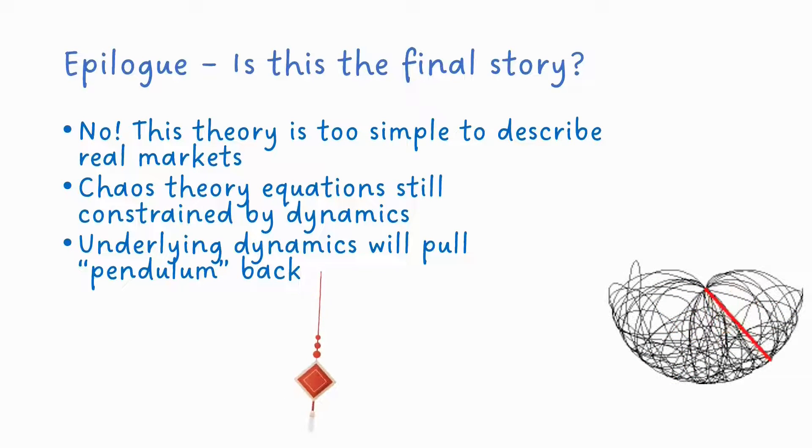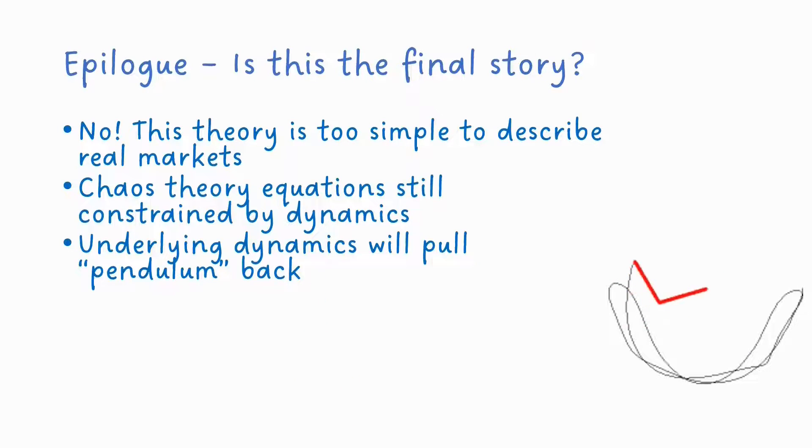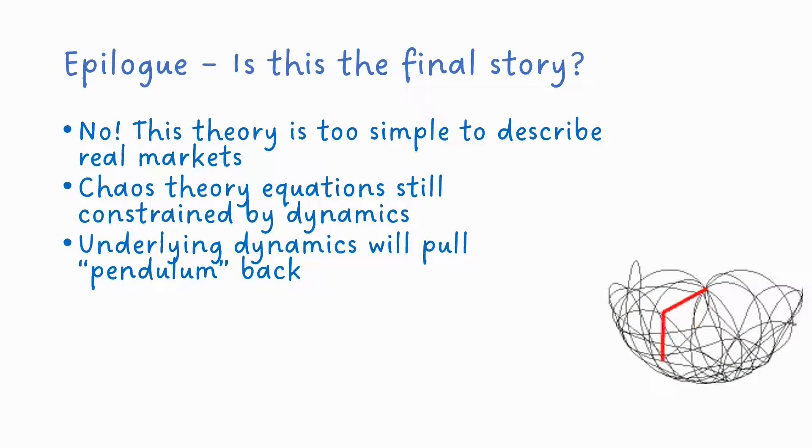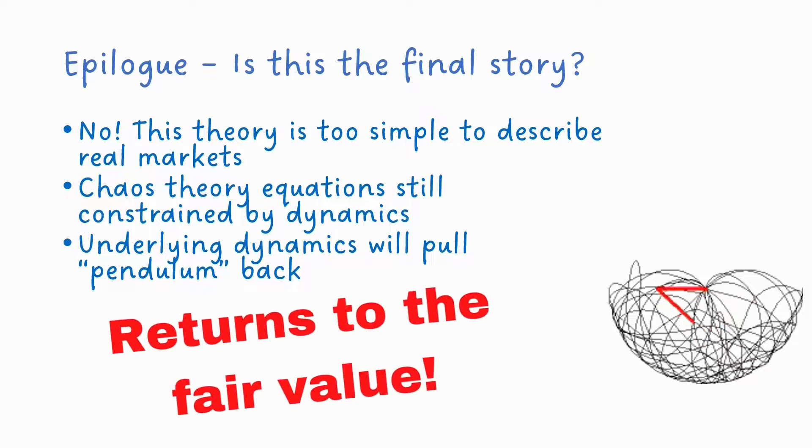So chaos theory tells us how constrained systems can still behave unpredictably. And what that means is that in the short term, we might expect to be able to somewhat predict the trajectory of a variable in a chaotic system. And also in the long term, we know what it kind of looks like and what constraints the system.